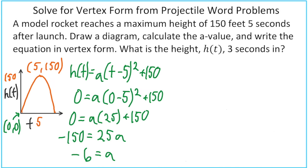So now we can write our equation in vertex form. We rewrite what we started with, but now we put in negative 6 for the a value.